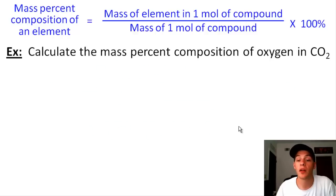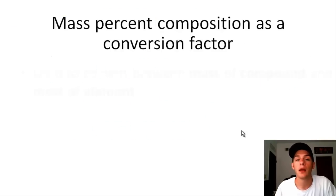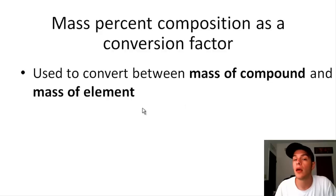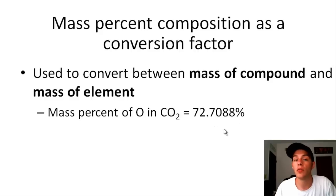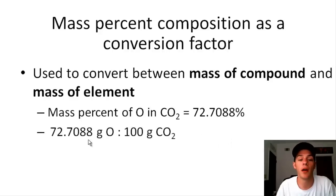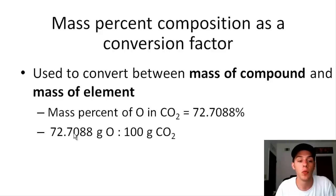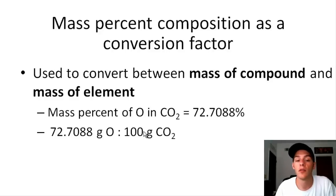One of the most useful things about mass percent composition is that it can be used as a conversion factor to convert between the mass of a compound and the mass of an element in that compound. Since oxygen in CO2 is 72.7088%, we have a 72.7088 to 100 ratio of oxygen to CO2. This can be expressed as 72.7088 grams of oxygen per 100 grams of CO2 — in any unit of mass, as long as the ratio stays the same.